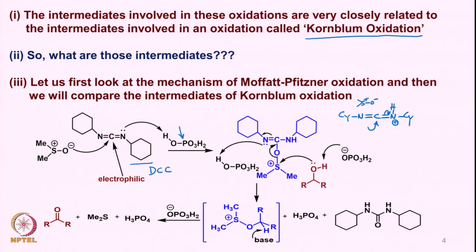You have DMSO here, with methyl groups. The DMSO oxygen attacks onto this carbon. When DMSO attacks onto this carbon — which now has a protonated nitrogen — this intermediate comes out. This is a very crucial intermediate. Again, the second nitrogen gets protonated, forming the same ammonium ion on the other nitrogen, and again this carbon becomes very electrophilic.